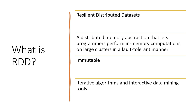RDD is the chunk of data — a distributed memory abstraction — that you take into the memory of each node where your executors are running and run your program in parallel. RDD is immutable: when it is created it cannot be altered. When you do an operation on an RDD, it creates a new RDD, and that way the lineage is also maintained. It is well suited for interactive and iterative algorithms, which is where Spark scores over MapReduce.